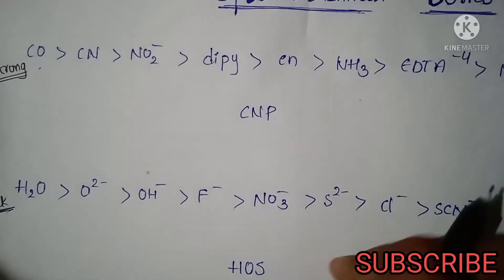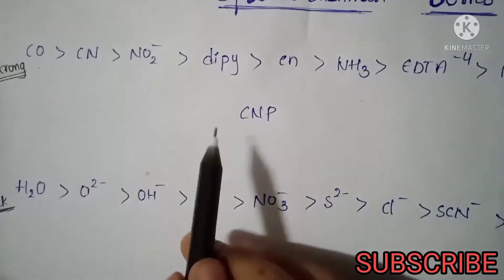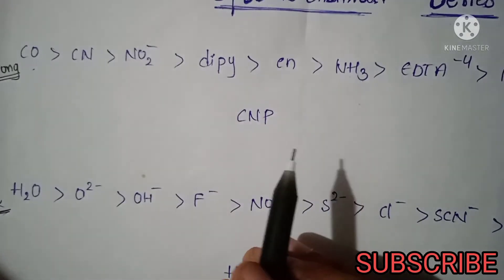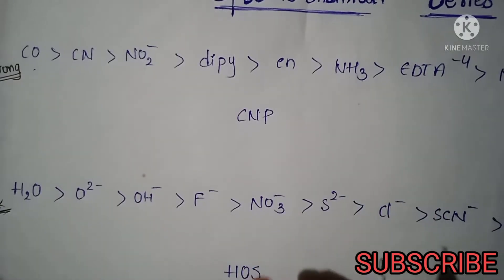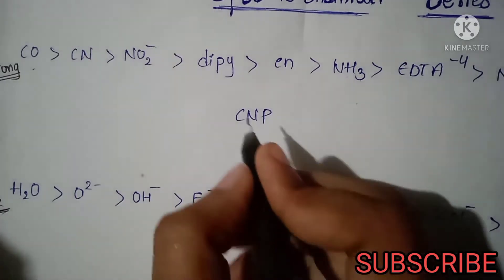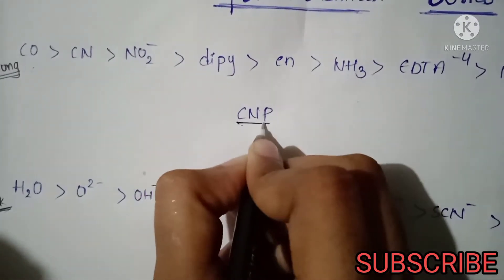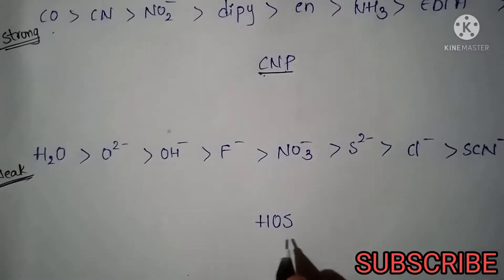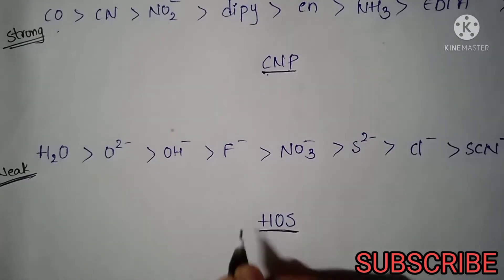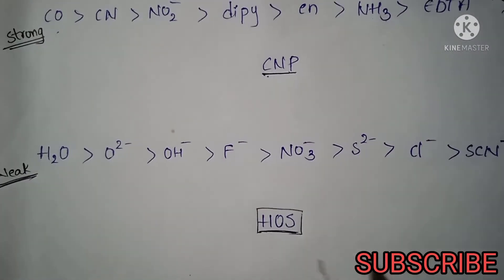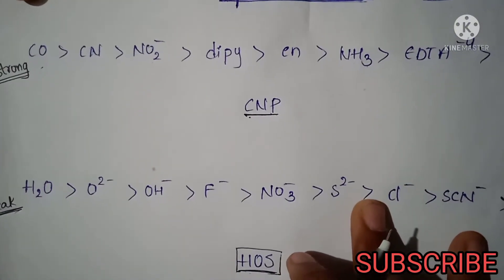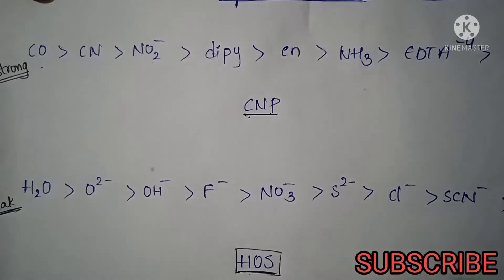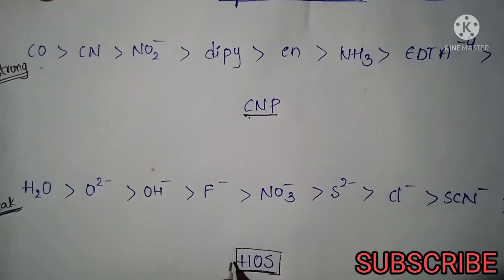So we will show the strong field and weak field ligands using mnemonics. CNP is for strong field ligands and HOS is for weak field ligands — CNP and HOS.